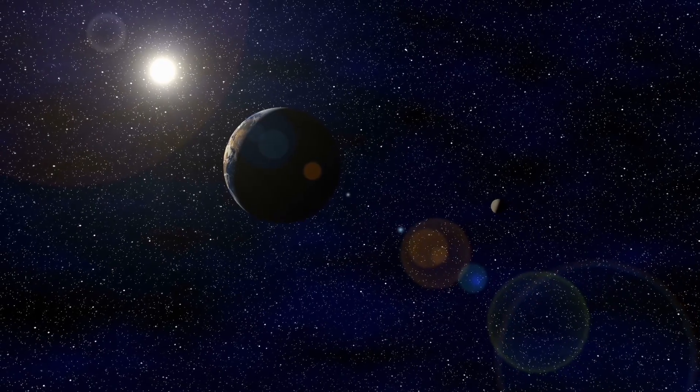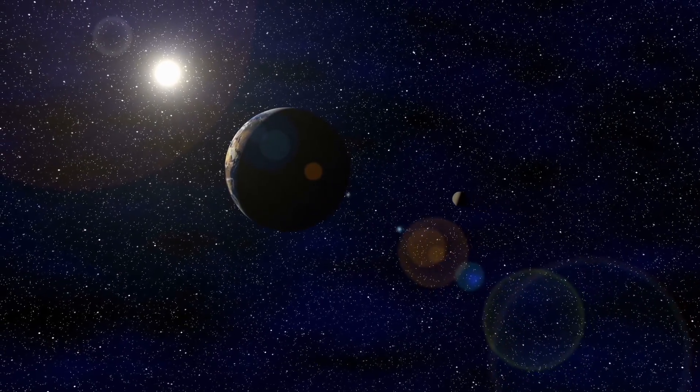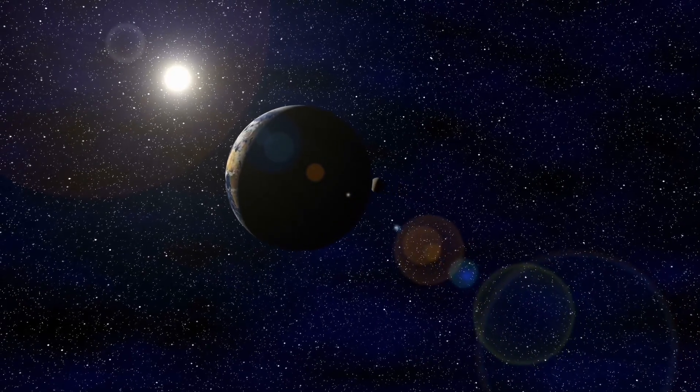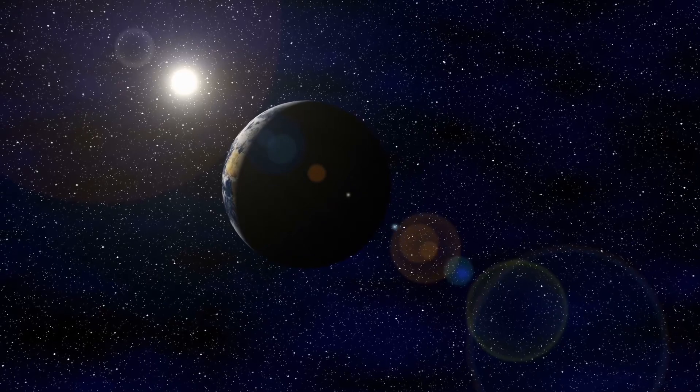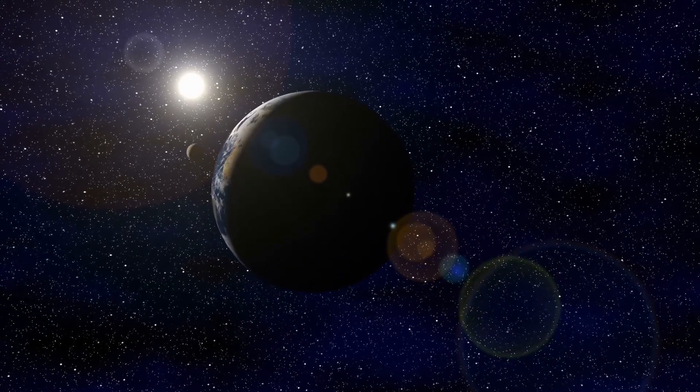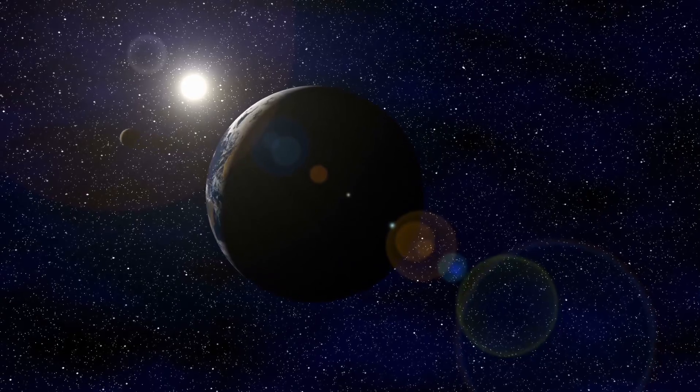The length of the day varies from planet to planet. For example, on Earth, it takes approximately 24 hours for one complete rotation, which gives us a 24-hour day. However, on other planets, the length of the day can be very different.